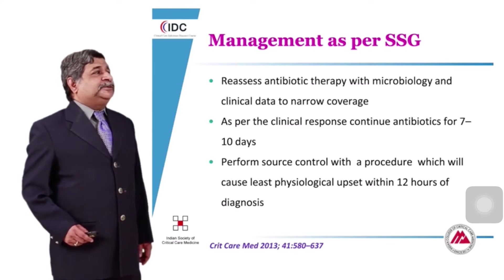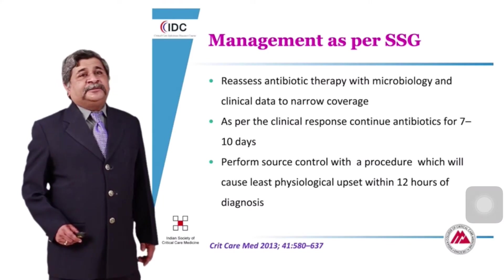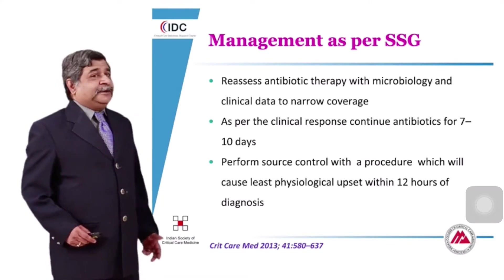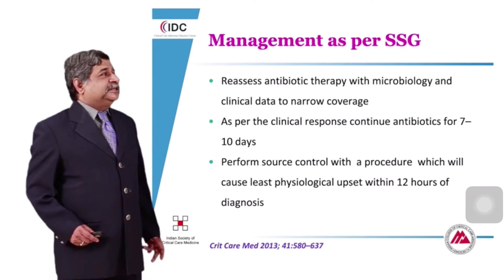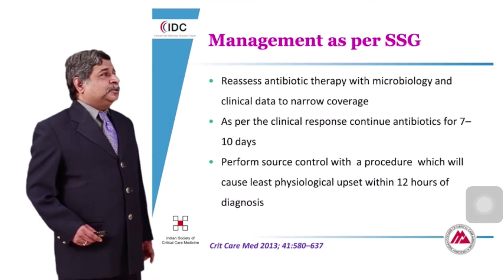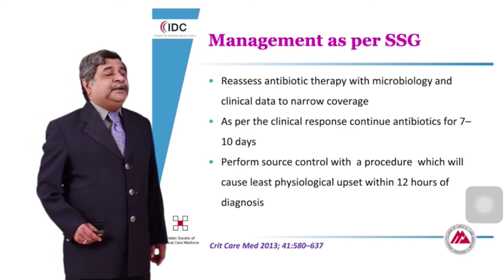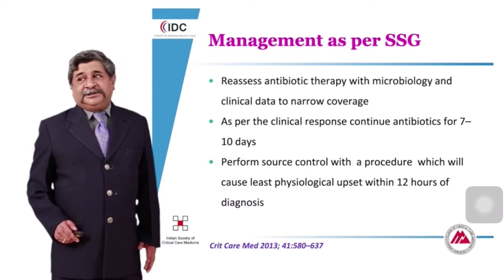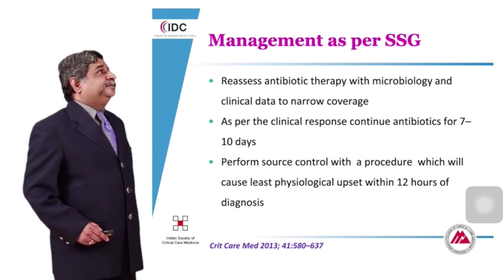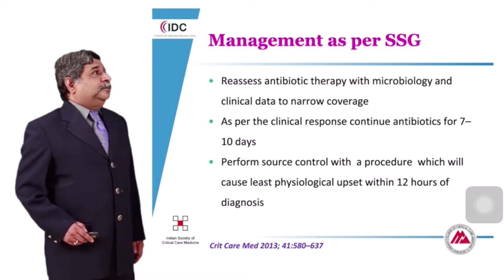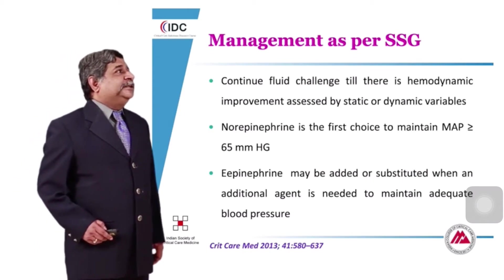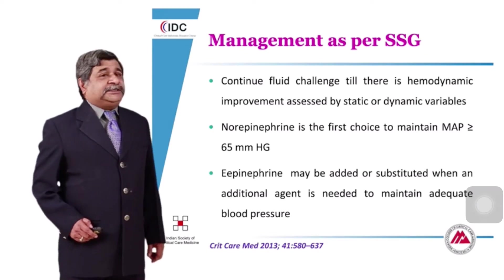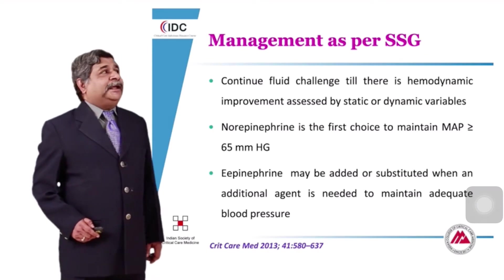Reassess antibiotic therapy with microbiology and clinical data to narrow coverage and avoid antibiotic resistance development. As per clinical response, continue antibiotics for 7 to 10 days. Nowadays, procalcitonin levels are also used to guide discontinuation of antibiotics. Perform source control with a procedure causing the least physiological upset within 12 hours of diagnosis. Continue fluid challenge until hemodynamic improvement as assessed by static or dynamic variables.